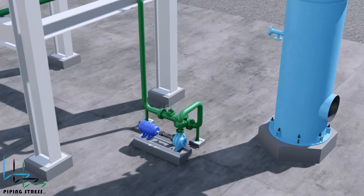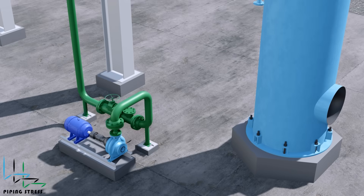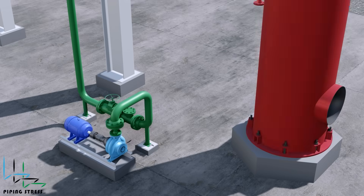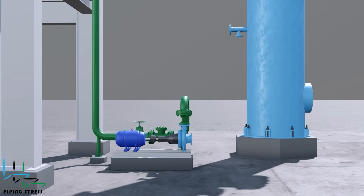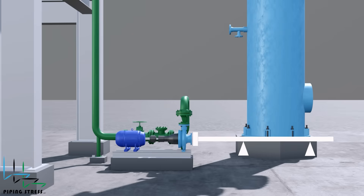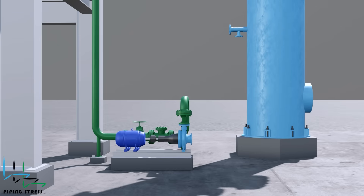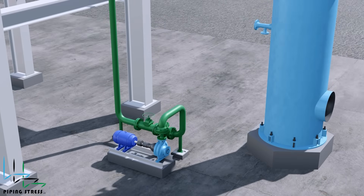The suction line must be as short and as close as possible to the source. A piping stress engineer should carefully design the suction piping together with the piping designer. Looking at the suction nozzle thermal expansion, it is in the shaft direction. Any long piping run in that direction will interact with the suction nozzle and the pump. The suction line should be routed as short as possible in the shaft direction, and a vertical or horizontal turn will help manage the suction line's expansion, making the suction nozzle expansion smoother.